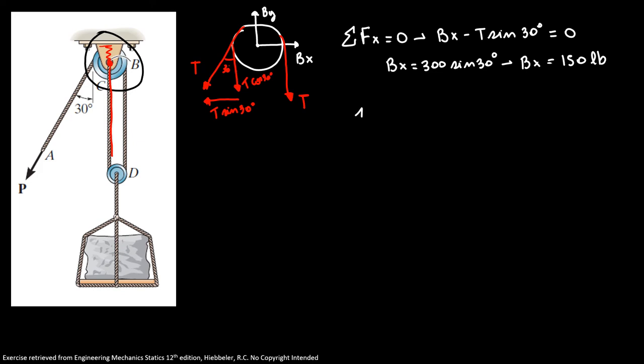Now we're going to apply the sum of forces in Y direction equals 0. We have B_Y minus tension minus tension cosine of 30 equals 0. So our B_Y equals tension times (1 plus cosine of 30 degrees).